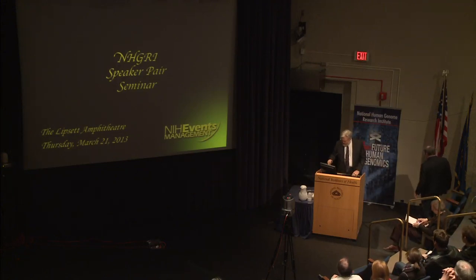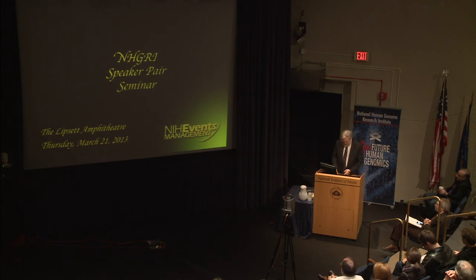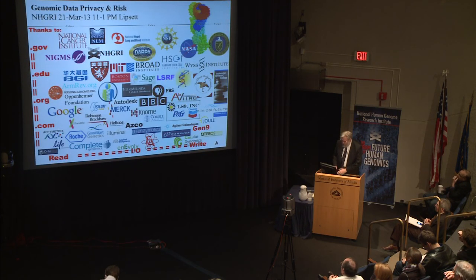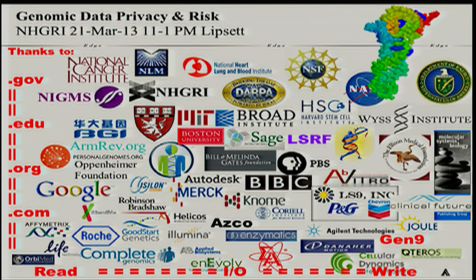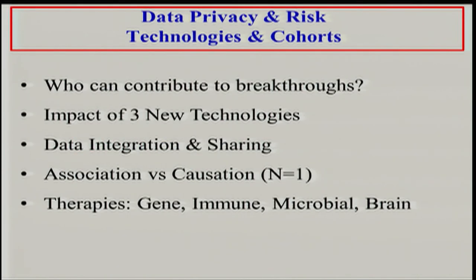Thank you very much, everyone, especially Zach, for setting that up. This is my thank you slide and conflict of interest. Each of these icons represents some institution that is very pragmatic and practical about helping our world get better. When I talk about data privacy and risk, I inevitably have to talk about technologies and cohorts, and this is roughly the narrative we'll be talking about today.